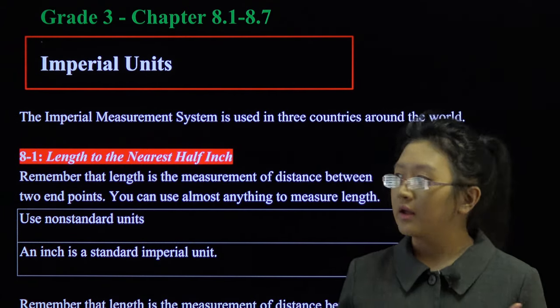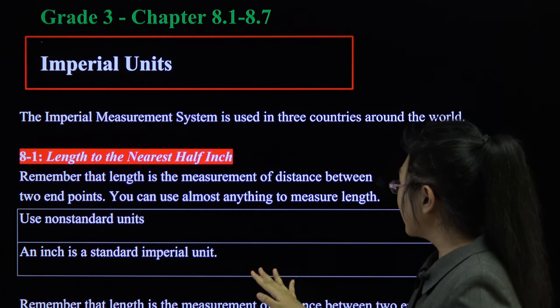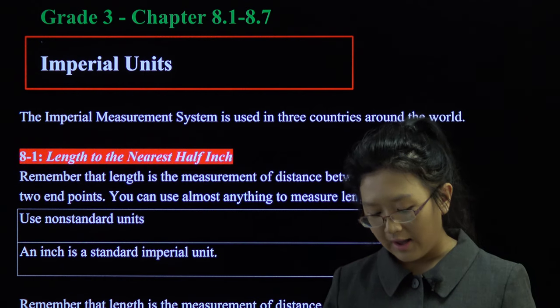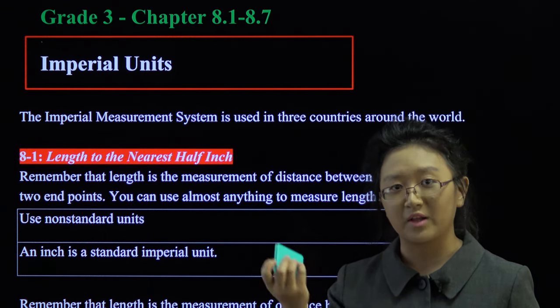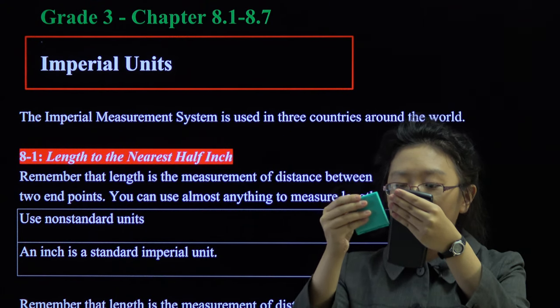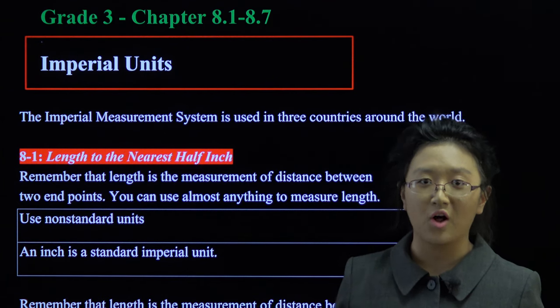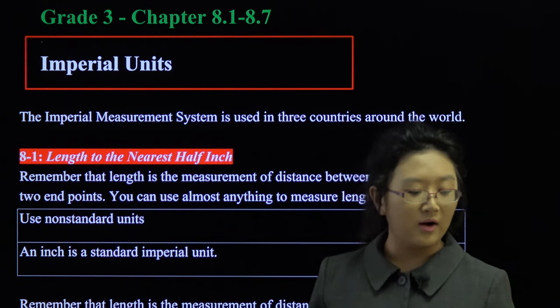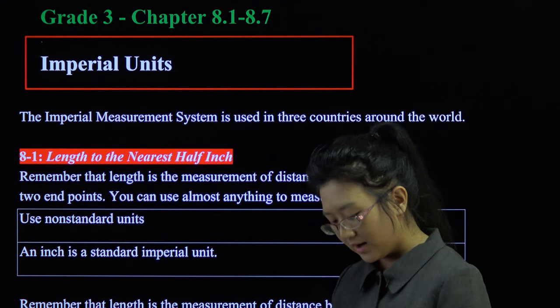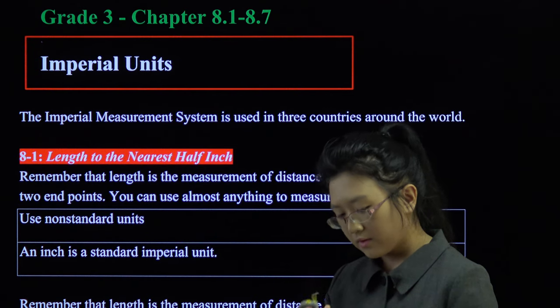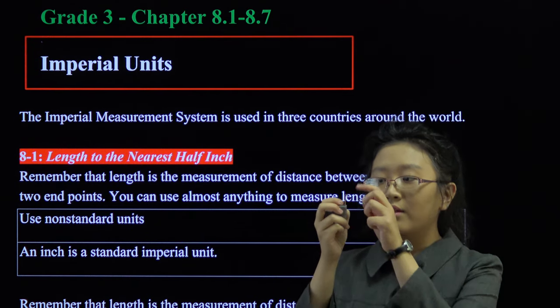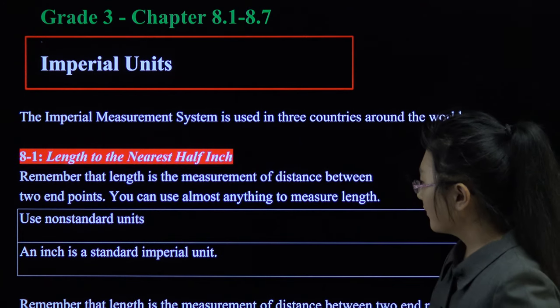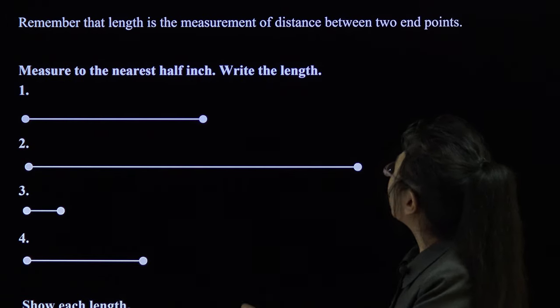We start with length. Remember that length is the measurement of distance between two end points. You can use almost anything to measure length. Say we have this calculator here and this hand mirror. It's a pocket mirror, guys. This calculator is around two pocket mirrors long. That is an example of a non-standard unit. However, a standard Imperial Units of measurement for length would be an inch. An inch is this big. This part, guys. To compare, this is my hand.